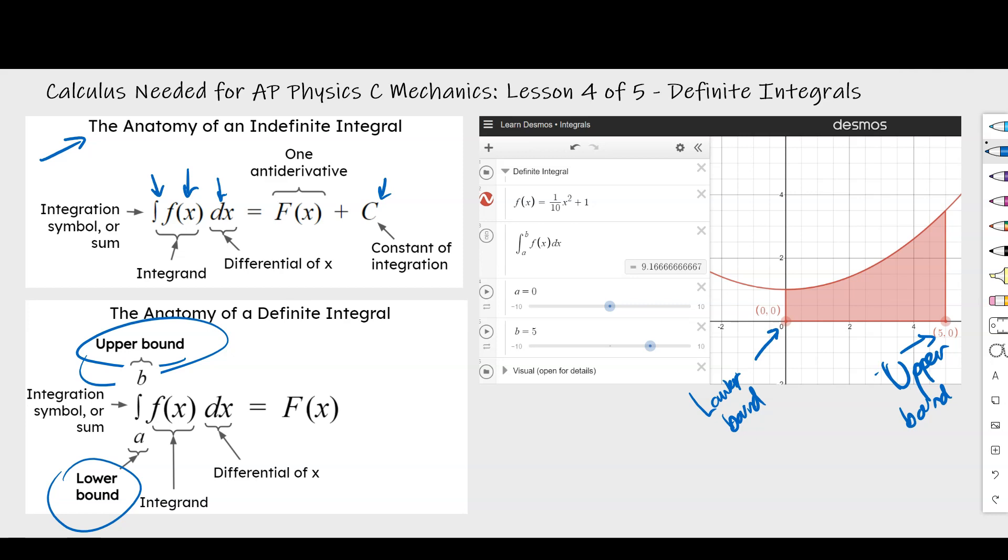One other obvious difference that you may have noticed is that there's no constant of integration down below in the definite integral, and that's because we are getting an answer that is a definite solid number as our answer to the question, how much area do we have under a curve given this upper and lower bounds?